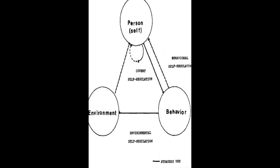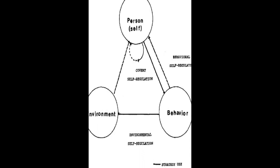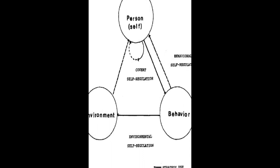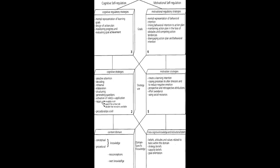The models are then compared in several aspects, such as phases and subprocesses, how they conceptualize metacognition, motivation, and emotion, top-down/bottom-up processes, automaticity, and context.